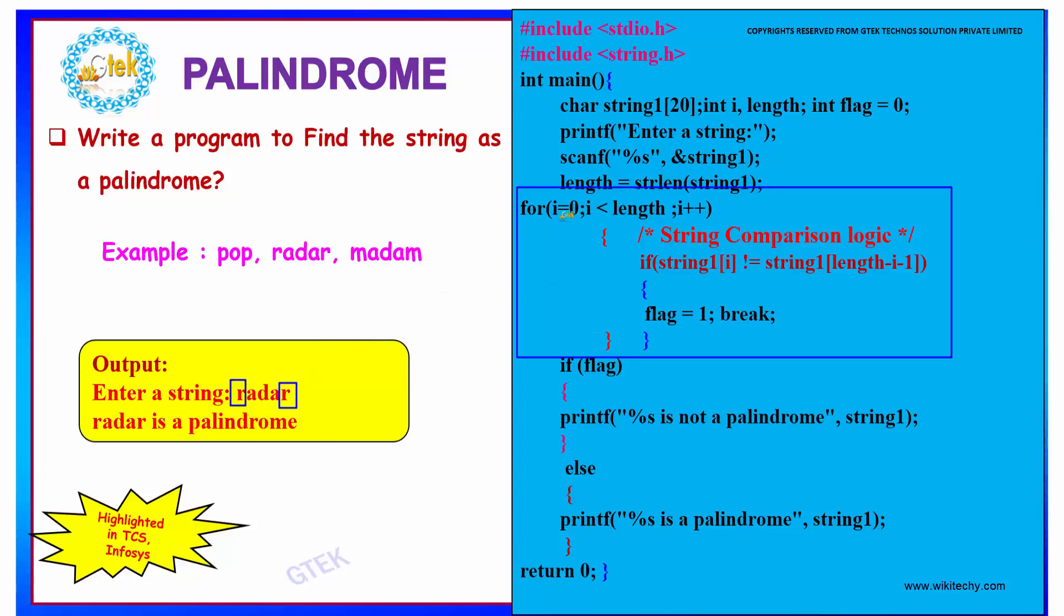This makes i equal to 1. So string[1] is A. And string length is 5, minus 1, minus 1, equals 5 minus 2, which gives you 3.